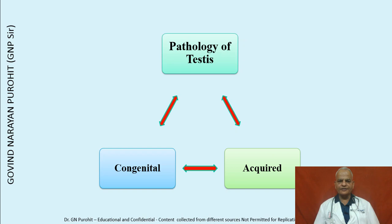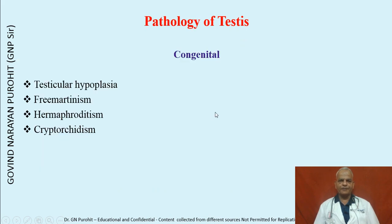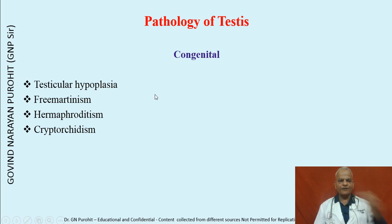The pathologies of the testes could be congenital or acquired. The congenital pathologies of the testes include testicular hypoplasia, freemartinism, hermaphrodites, and cryptorchids.